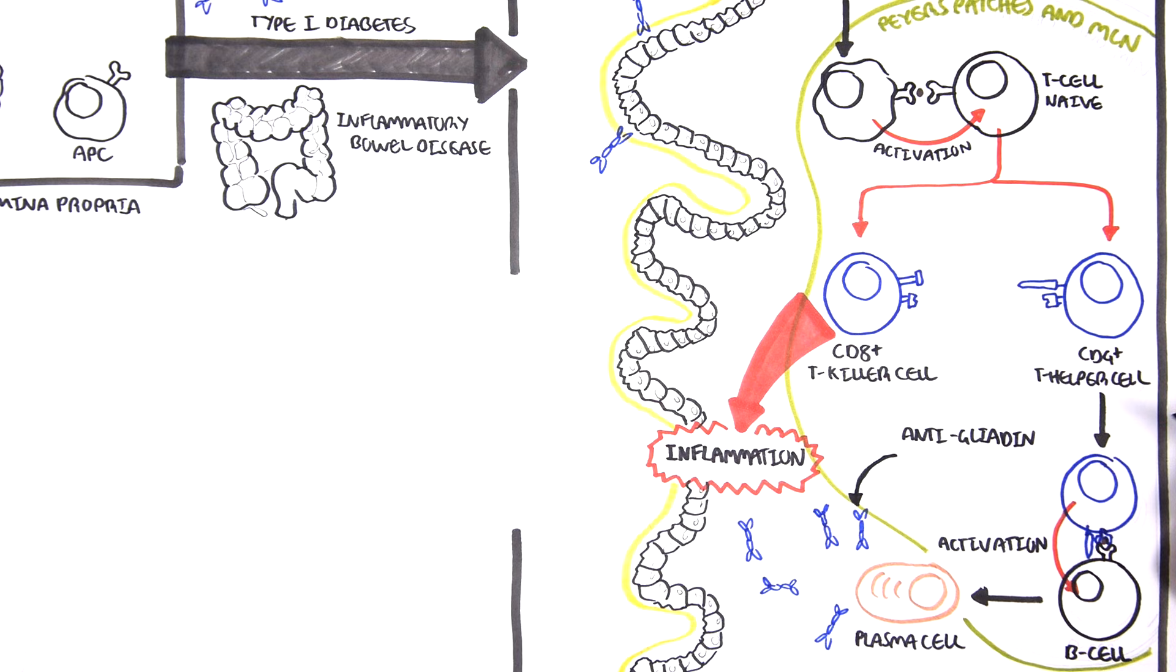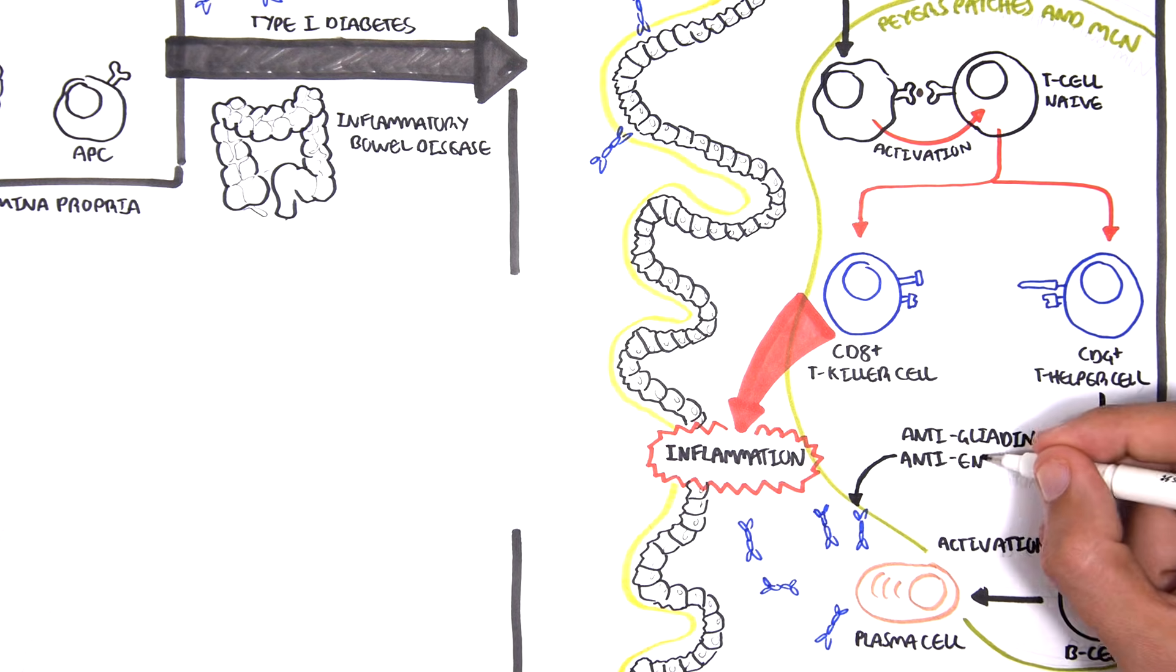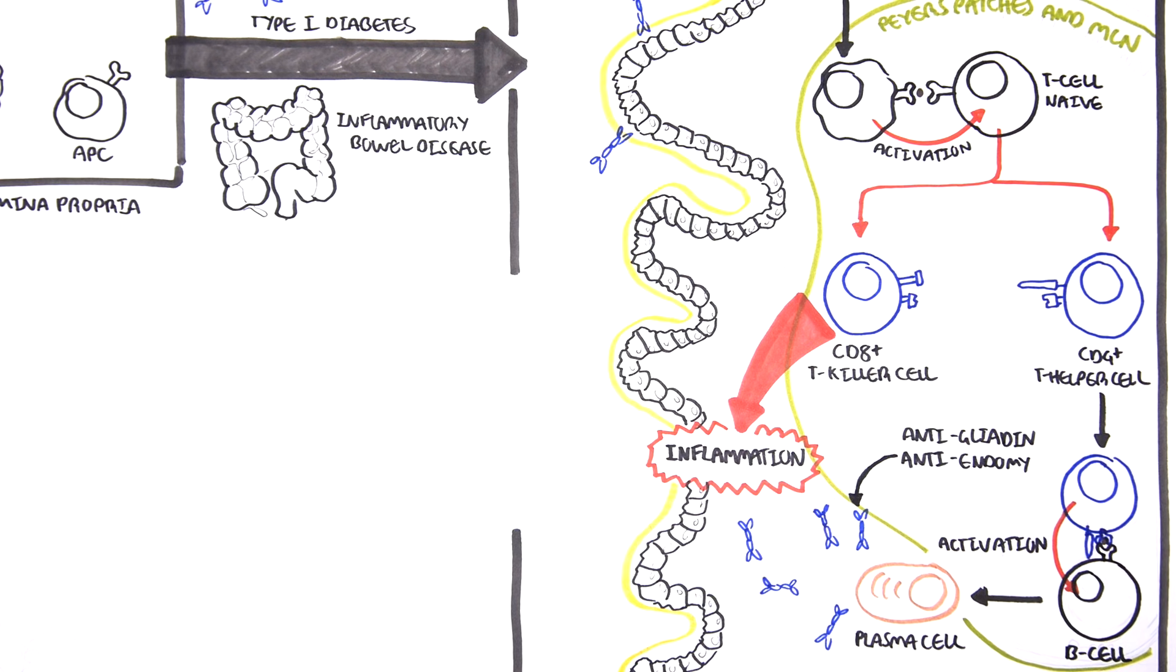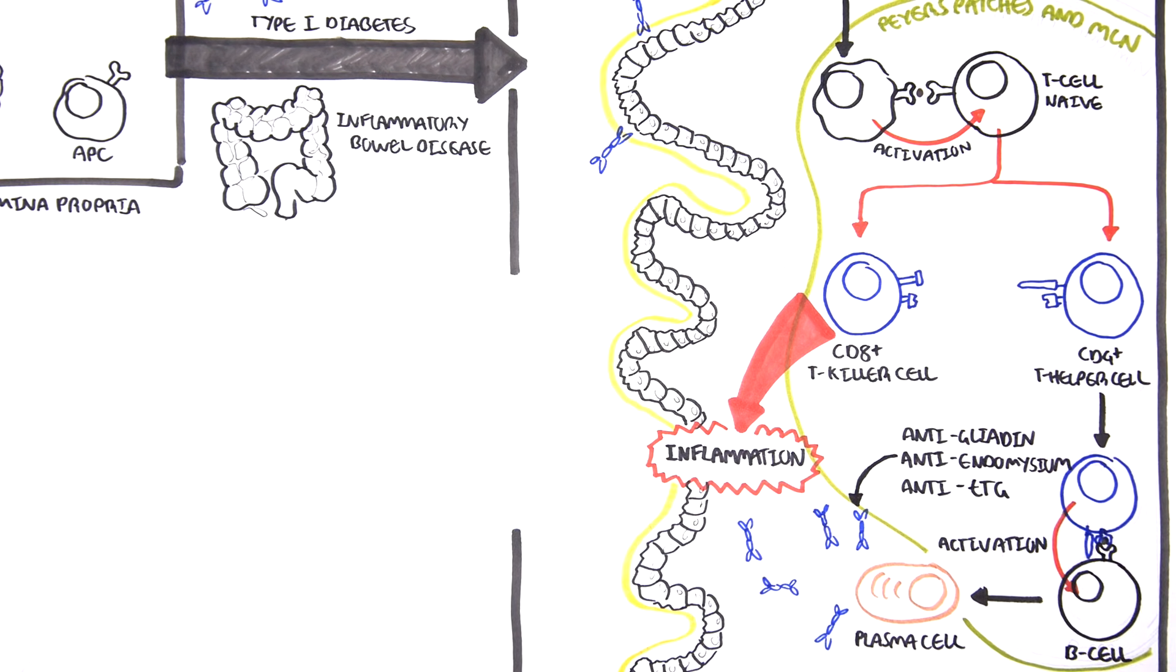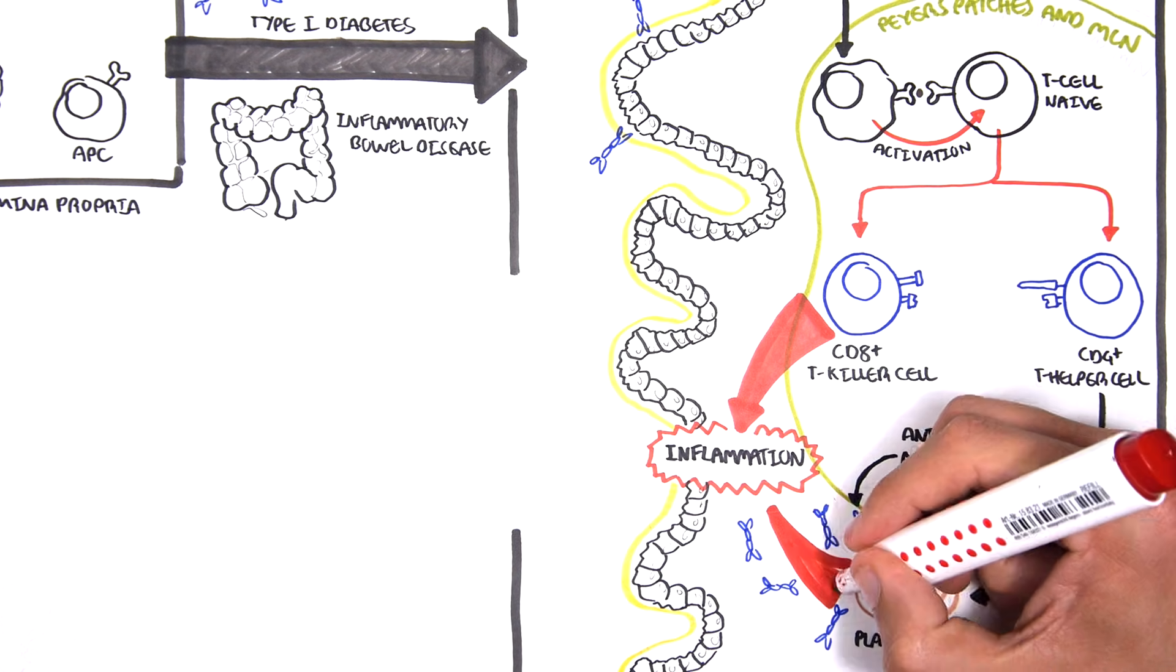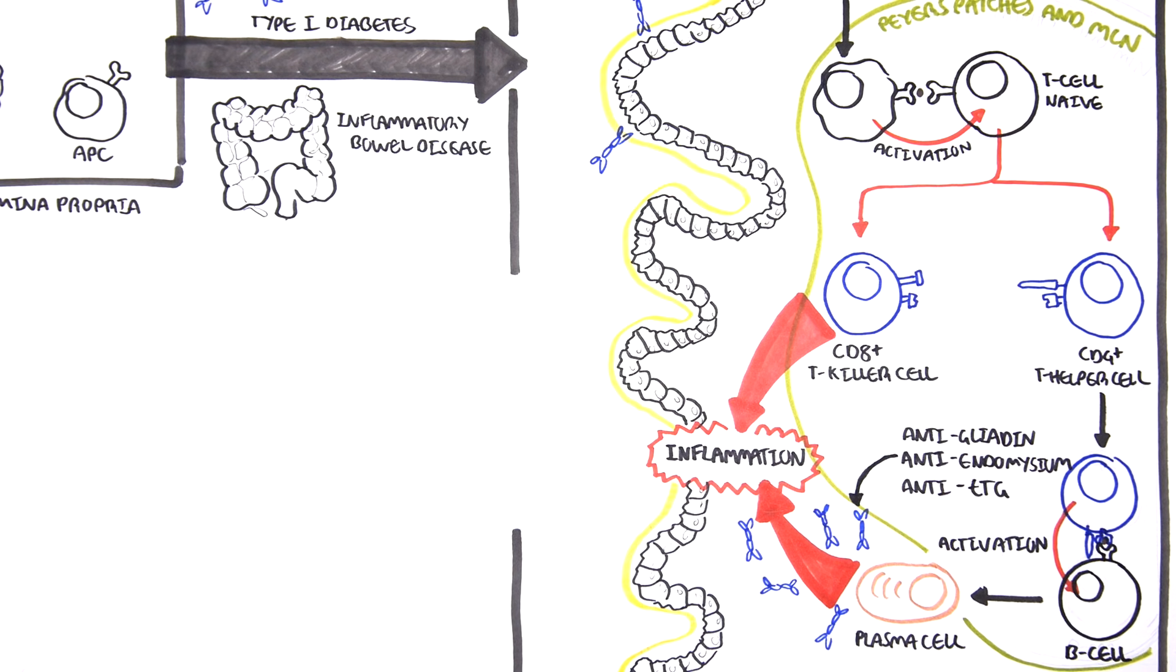Interestingly, the plasma cells activated in patients with celiac disease can actually produce other antibodies. So, we mentioned anti-gliadin, but there are also anti-endomysium, as well as anti-tissue transglutaminase. Regardless, when these antibodies are in contact with gliadin, endomysium or functional tissue transglutaminase, they will promote inflammation.